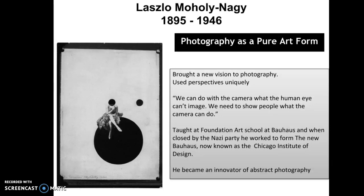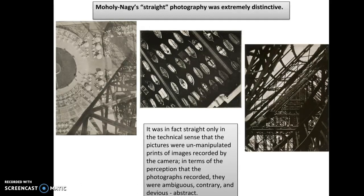Laszlo Moholy-Nagy brought a new vision to photography. He used perspectives very uniquely. He would say: 'We can do with the camera what the human eye can't imagine. We need to show people what the camera can do.' He was an innovator of abstract photography and a proponent to merge industry and art together. Moholy-Nagy's straight photography was actually not very much within the conventions of straight photography — it was very distinctive. The only ways it could be considered straight photography were in the mechanical or technical sense: pictures were unmanipulated prints in terms of brush stroke or tone.